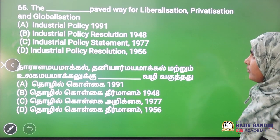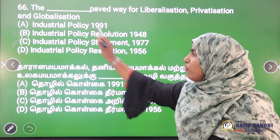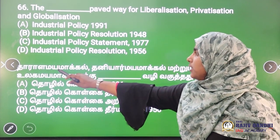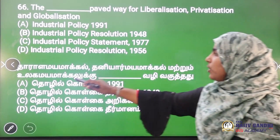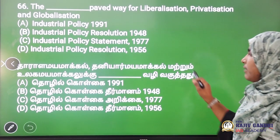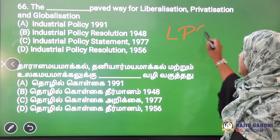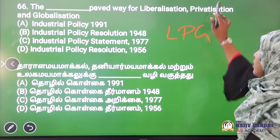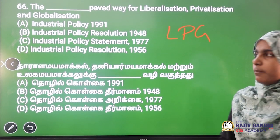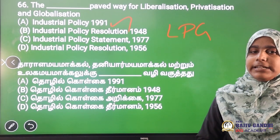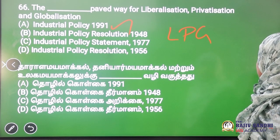What paved the way for liberalization, privatization, and globalization? This concept is called LPG — L for Liberalization, P for Privatization, and G for Globalization. The Industrial Policy of 1991 introduced the LPG reforms. Next question.